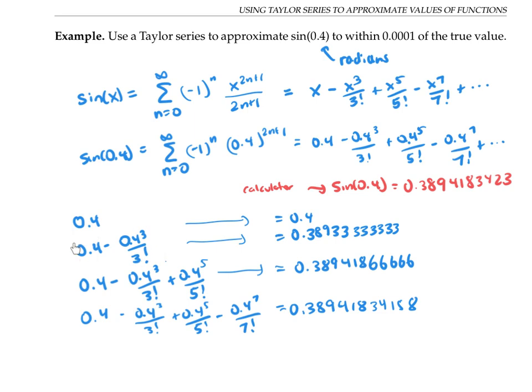So for example, if I use two terms, the remainder should be smaller than 0.4 to the 5 over 5 factorial. Let me write that down.